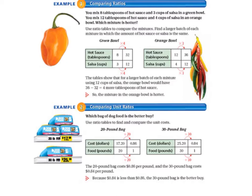And then we look at our orange bowl and we started with 12 tablespoons of hot sauce and 4 cups of salsa and we multiplied by 3 and that gave us the same 12 that we have in our green bowl.